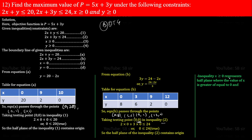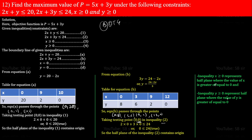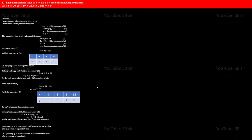For the inequality x ≥ 0, it represents the half plane where the value of x is greater than or equal to 0 — we don't need to draw a table for single-variable inequalities. Similarly, the inequality y ≥ 0 represents the half plane where the value of y is greater than or equal to 0. Together, x ≥ 0 and y ≥ 0 confine the solution to the first quadrant.